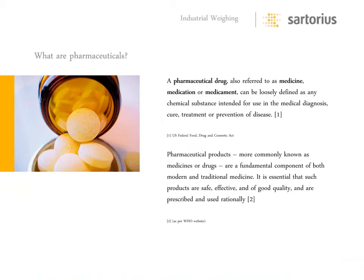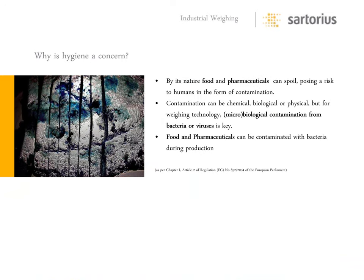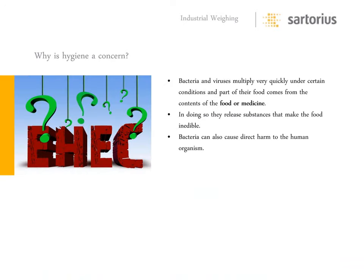These drugs are fundamental — about 90% of what gets done nowadays doesn't involve a knife in an operating room. The hygienic concern is that food and pharmaceuticals can spoil and produce a risk to humans in the form of contamination — biological, chemical, or physical. From the weighing technology point of view, microbiological contamination is a very major factor — things that grow in places that can't be cleaned easily. Bacteria and viruses multiply very quickly, which is why so much of these industries operate in giant coolers at low temperatures to slow down bacterial propagation.